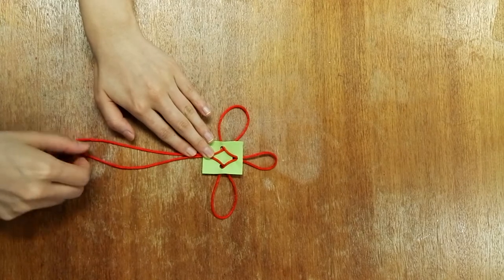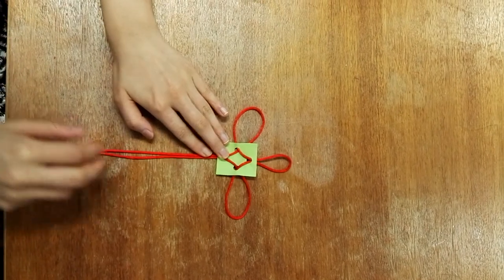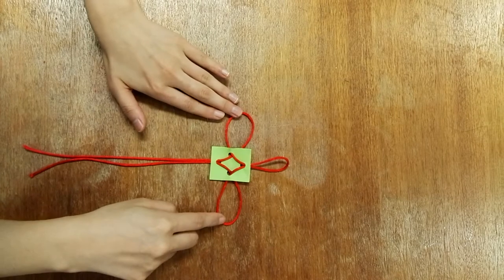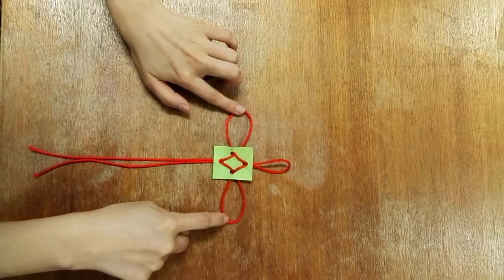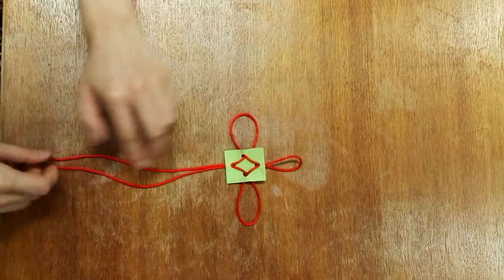Your cord will look like a cross with three bights: one on top and two on the sides, and the loose ends at the bottom.